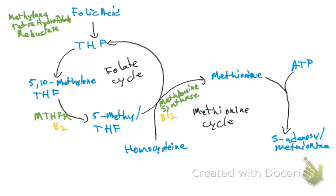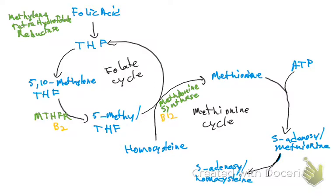S-adenosylmethionine then goes on to become S-adenosyl homocysteine. In the conversion from S-adenosylmethionine to S-adenosyl homocysteine, the process of methylation takes place. Then S-adenosyl homocysteine is converted back to homocysteine.